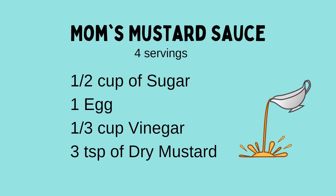Let's look at another example of proportions — this one is a personal favorite. This is my mom's mustard sauce, which we serve with ham dinner. Here's the recipe: to make four servings, you need half a cup of sugar, one egg, a third cup of vinegar, and three teaspoons of dry mustard. For the sauce to taste just like when my mom used to make it, I need to keep all of the ingredients in proportion. I once made a proportional error and added three tablespoons of dry mustard, which is a much larger amount — and let me just tell you, it tasted absolutely disgusting.